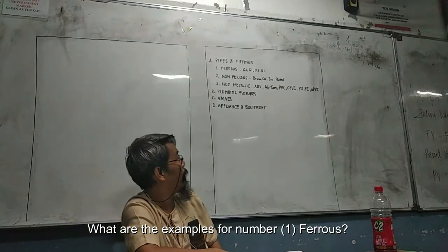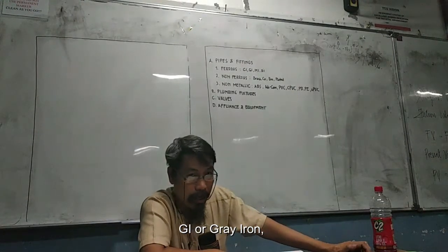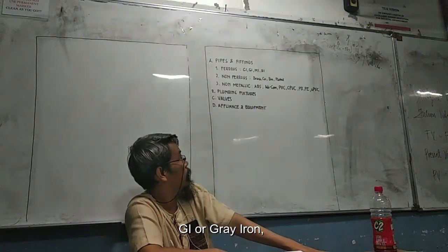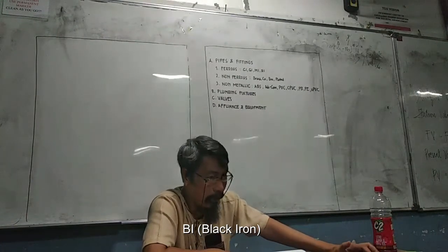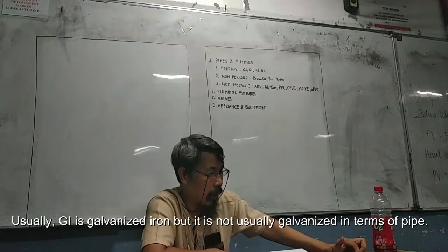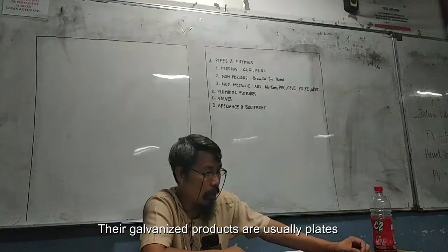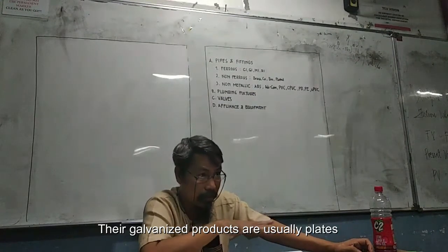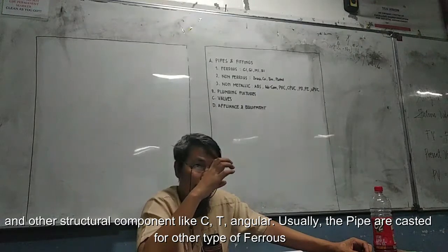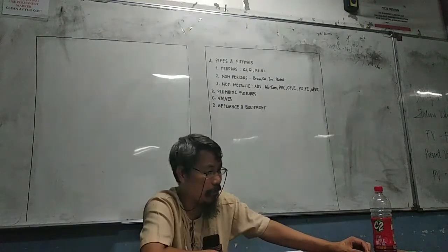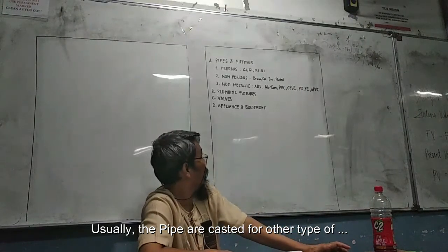Examples of ferrous pipes: CI or cast iron, GI or galvanized iron, and also grey iron. Another one is MI — malleable iron — and BI — black iron. Usually GI is galvanized iron, but it is not typically galvanized in terms of pipe; the galvanized products are usually plates and other structural components like C, T, and angular sections. For pipes, cast iron is the usual choice.